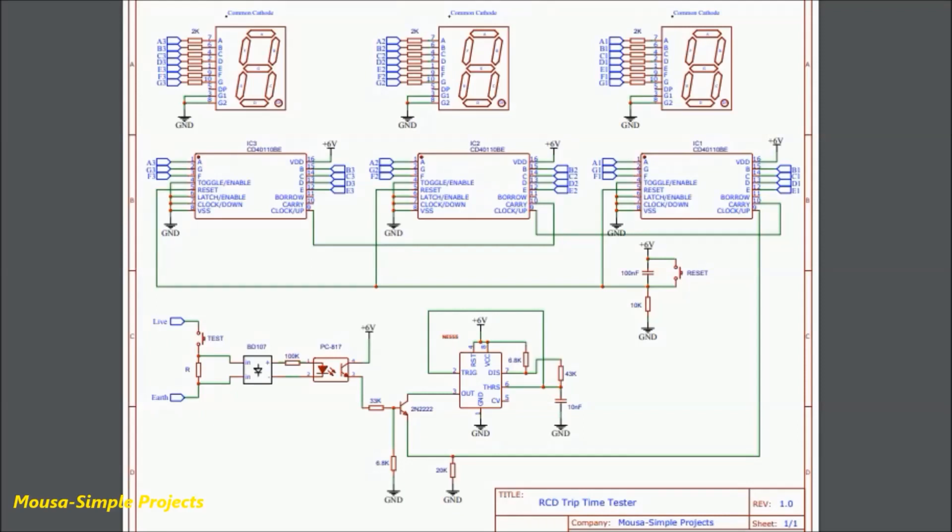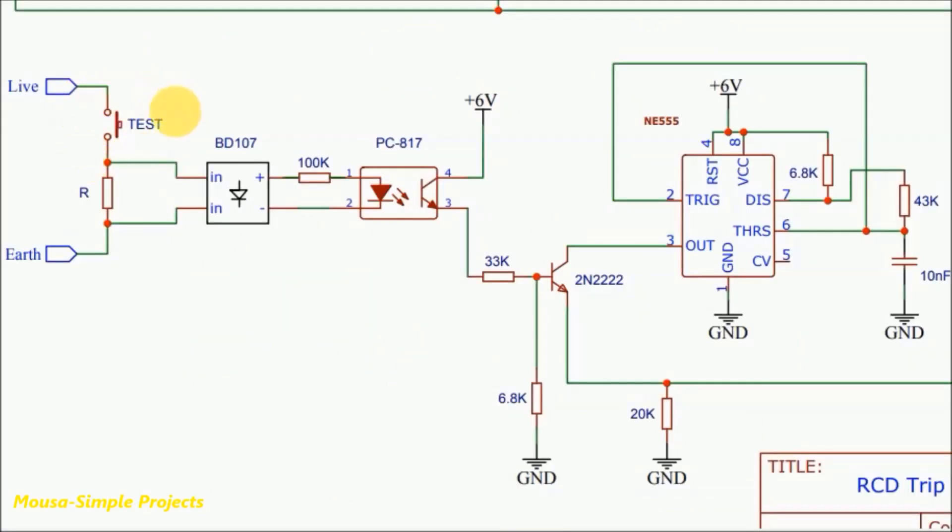This is my circuit. This circuit consists of a 1 kHz oscillator, 7-segment counter, and some other components. By pushing this button, some leakage current starts flowing from the live wire to the earth through this resistor.